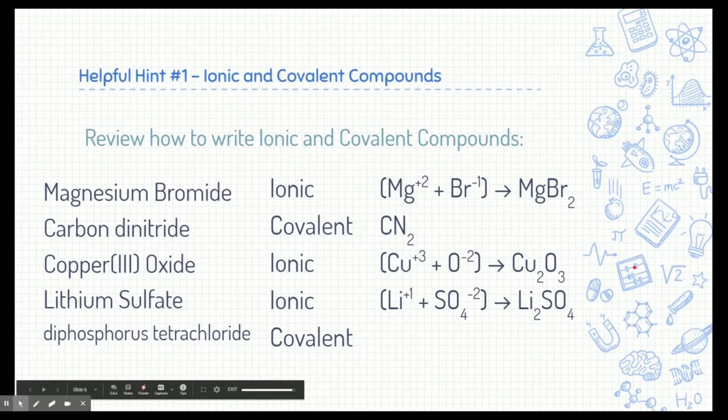Diphosphorus tetrachloride is covalent, so we worry about the prefixes. Diphosphorus means two phosphorus. Tetrachloride — tetra means four — so four chlorines, giving us P2Cl4.